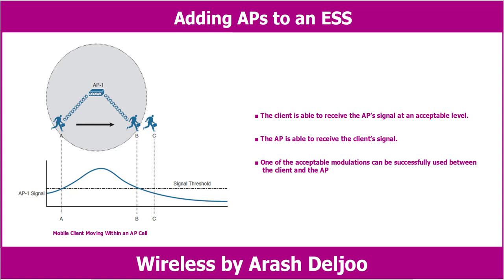As soon as the client goes outside the cell range at point C, as you can see here, one or more of the conditions fail and the client loses the association. In the figure, the AP signal has fallen below an acceptable threshold.